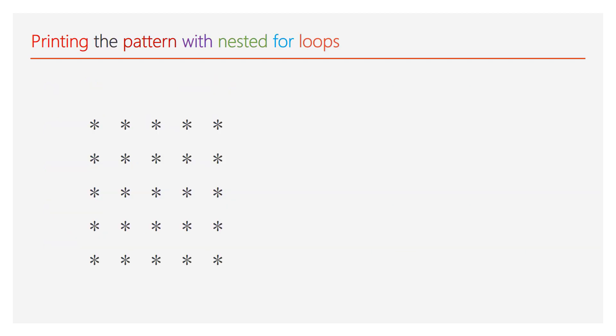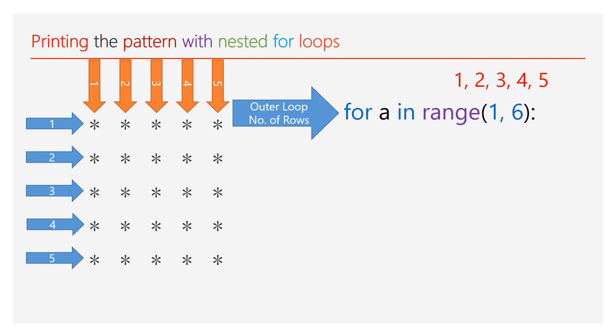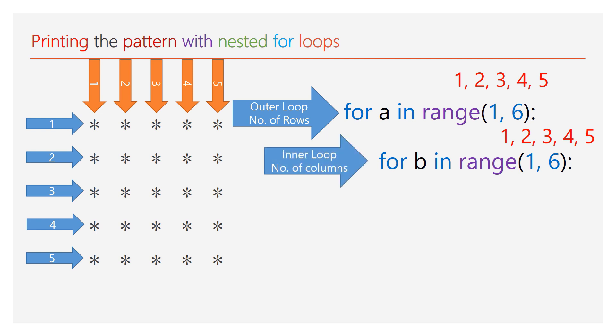Now we will see printing the square pattern by using a nested for loop. First, count the number of rows and the number of columns in the pattern. In this example, the number of rows are 5 and the number of columns are 5. Take one outer for loop with the range 1 to 6 — it will iterate 5 times and decides the number of rows to be printed. Now take one more inner for loop with the range 1 to 6, which also iterates 5 times and decides the number of columns. I am using a print function with star inside the inner loop.